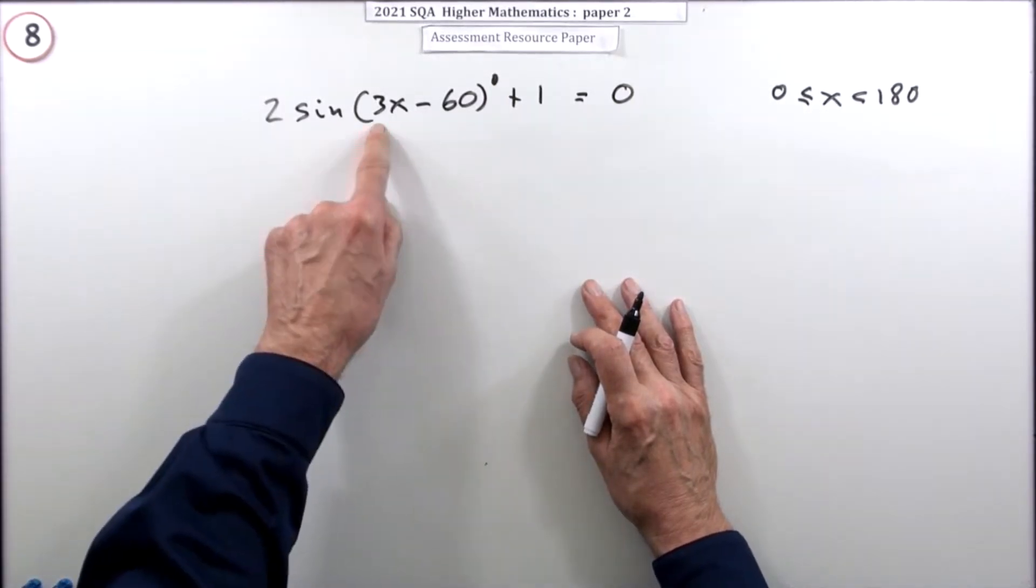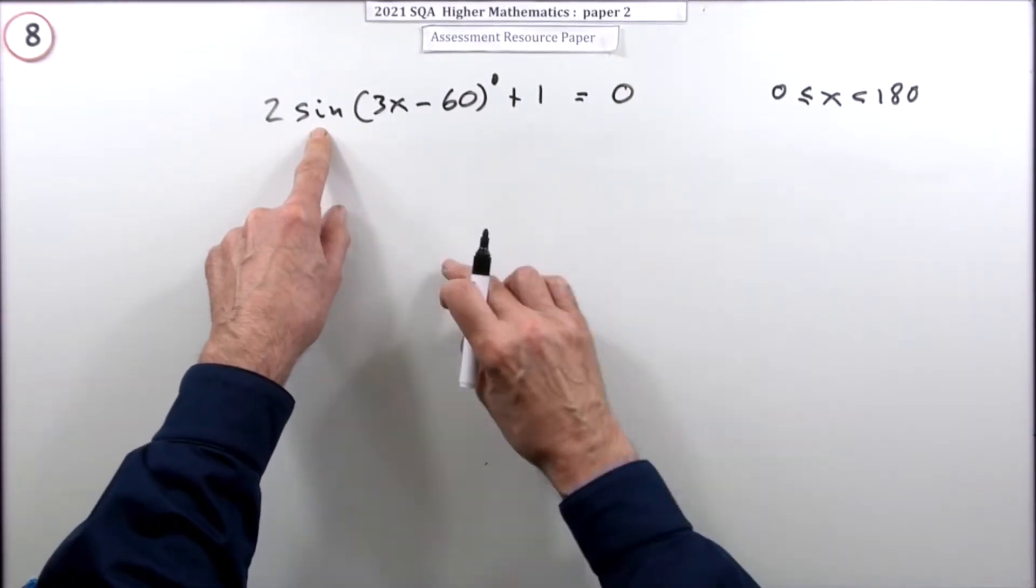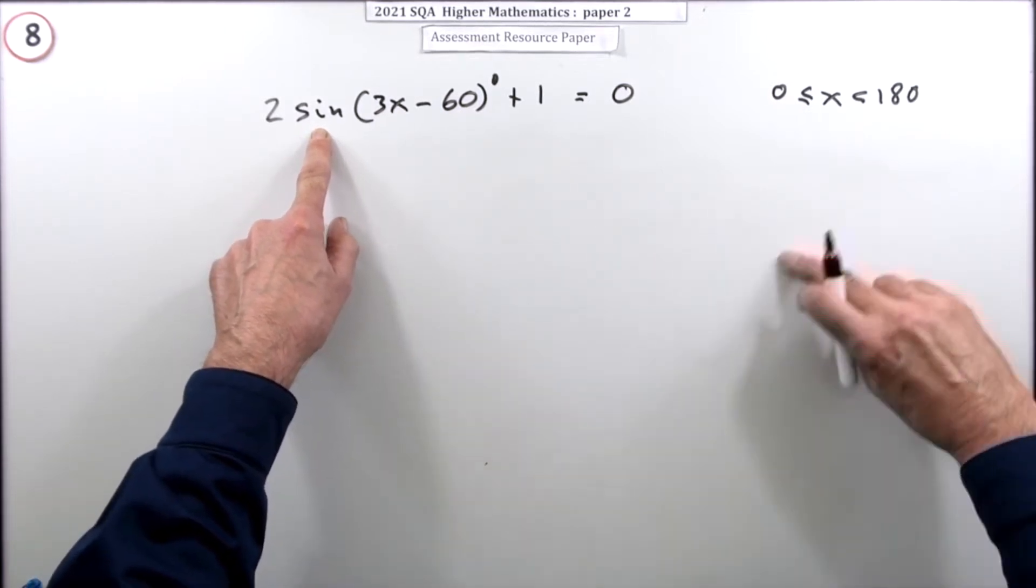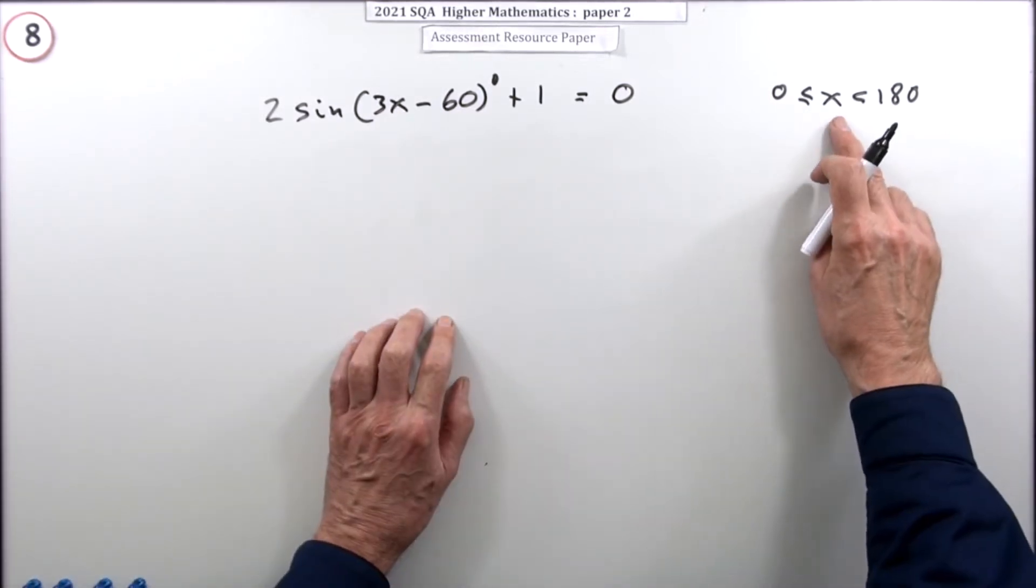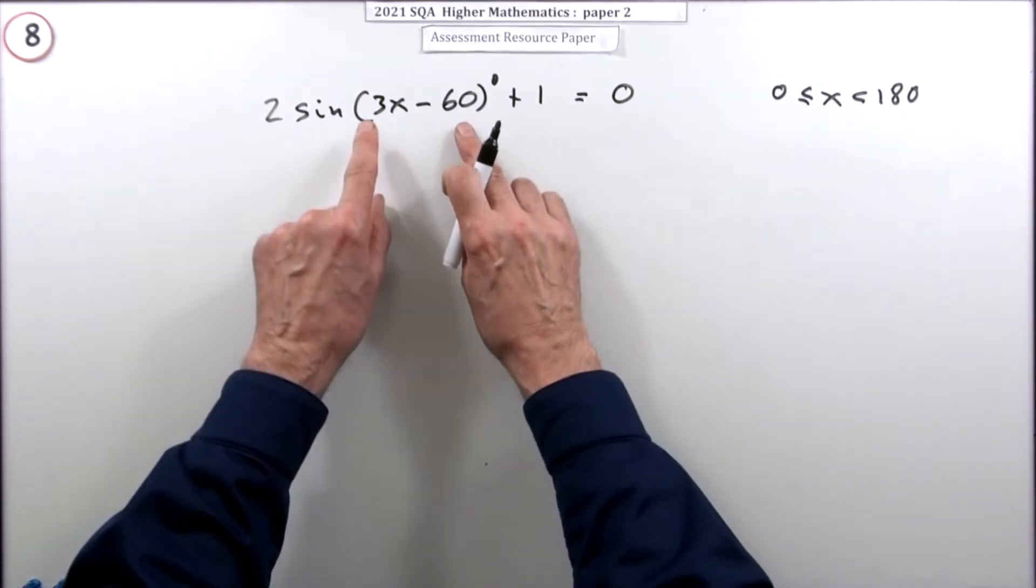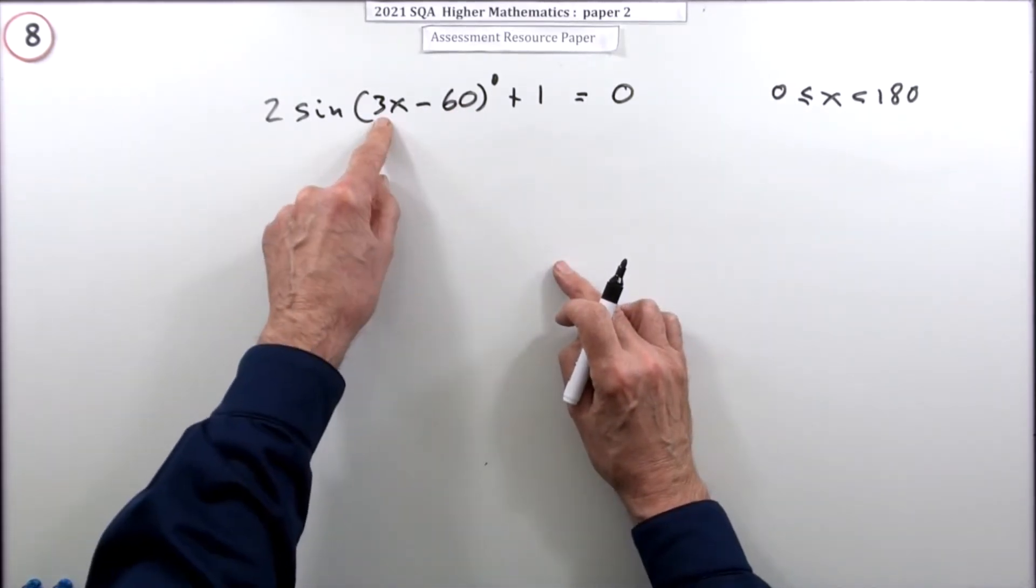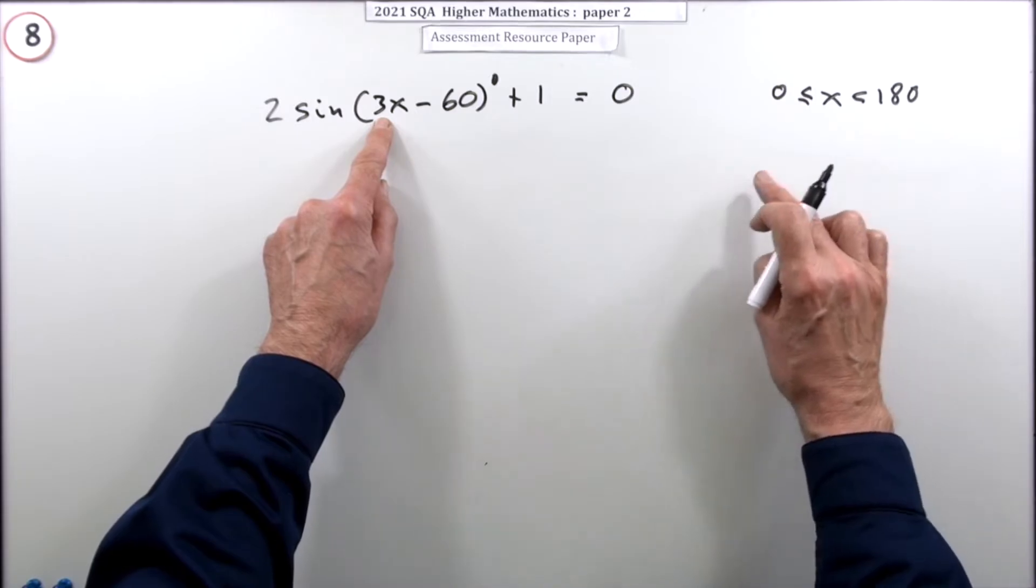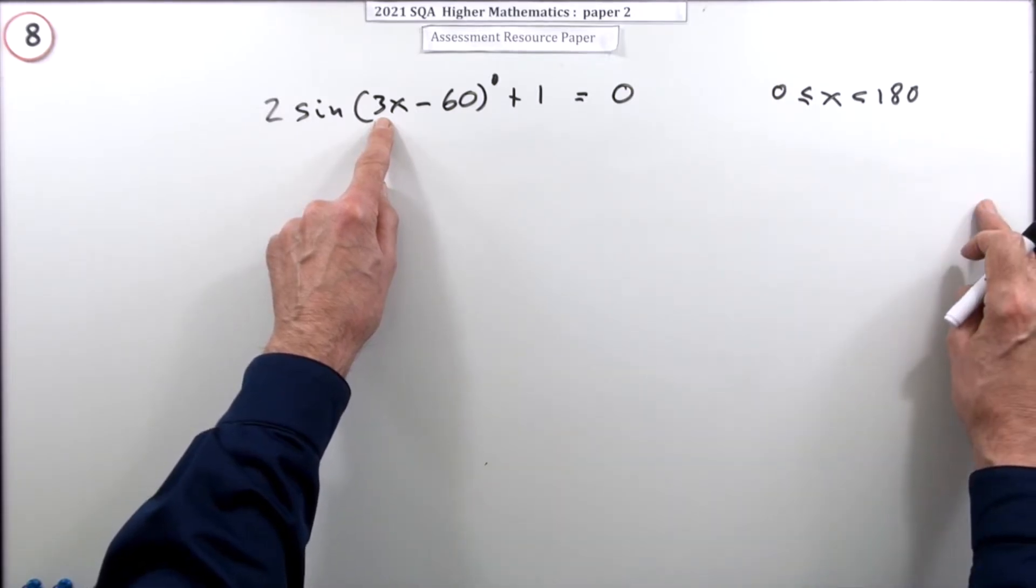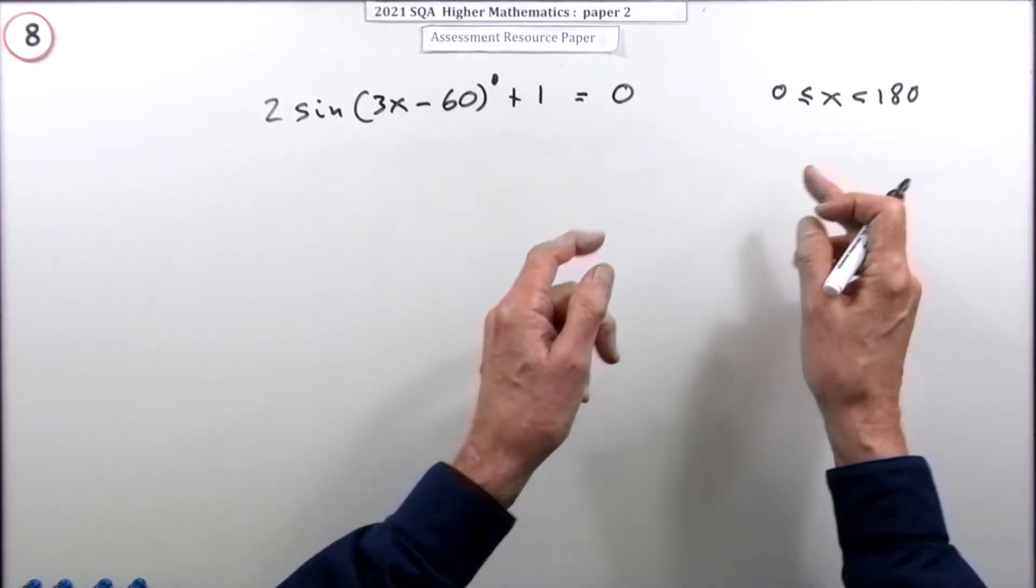Since it's a trigonometrical one, the answers go on forever because they keep repeating themselves. It says you only want the answers between zero and 180, but you have to watch because you'll be shifting things. There's a 3 times x which means you could have large answers initially because you're going to divide them by three and that might bring them into range.